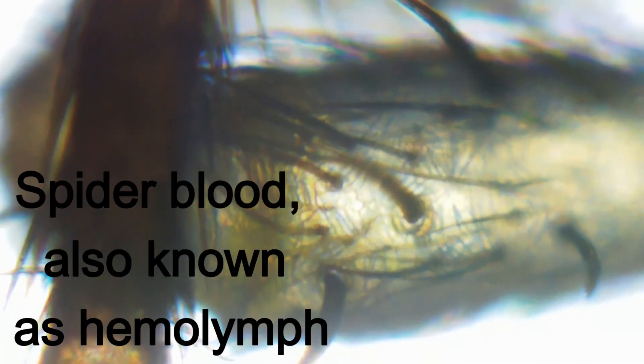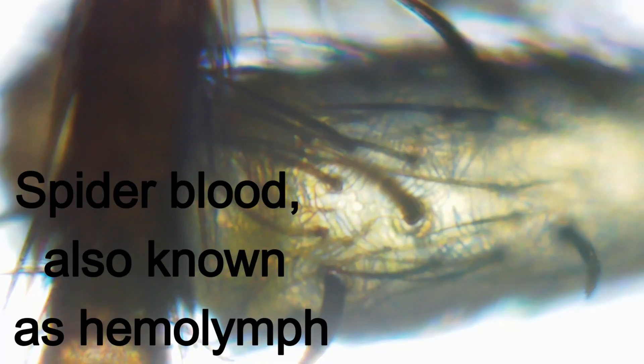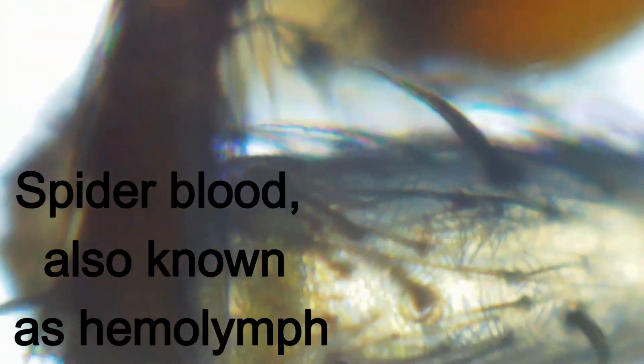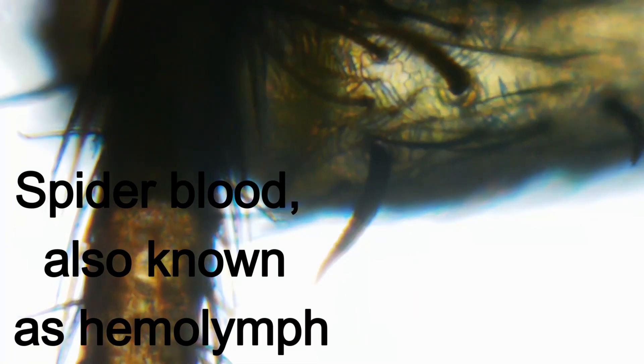And what a web it is, unlike the perfect spirals of an orb-weaver spider. The American house spider prefers a tangled, three-dimensional cobweb. An architectural mess to our eyes, but a brilliantly efficient hunting ground to the spider.